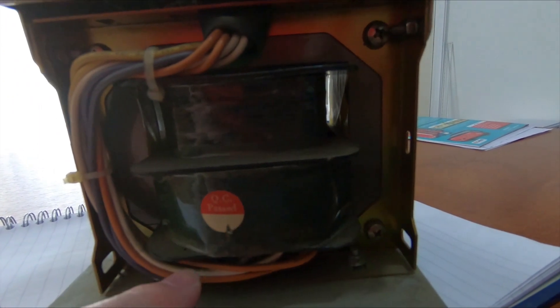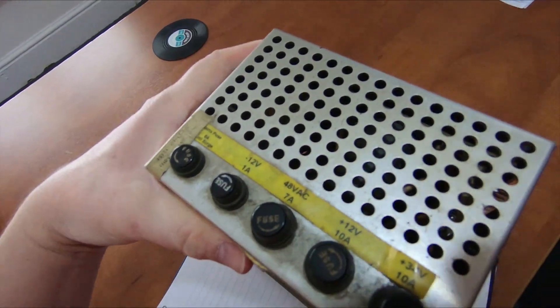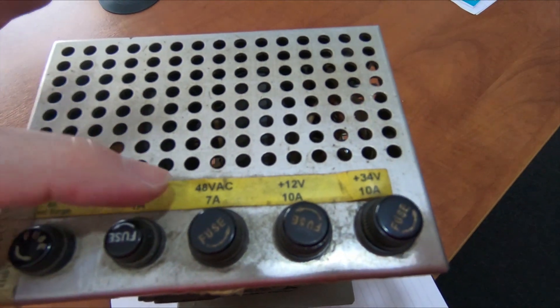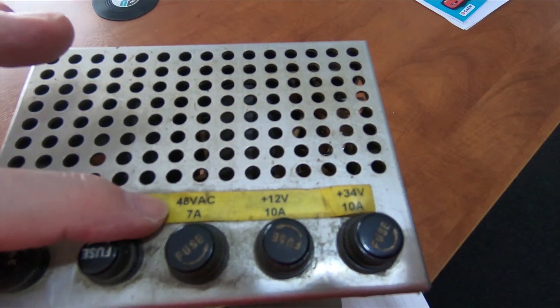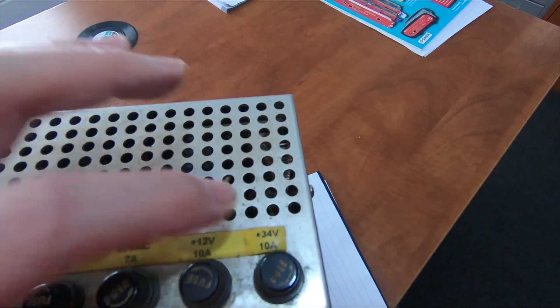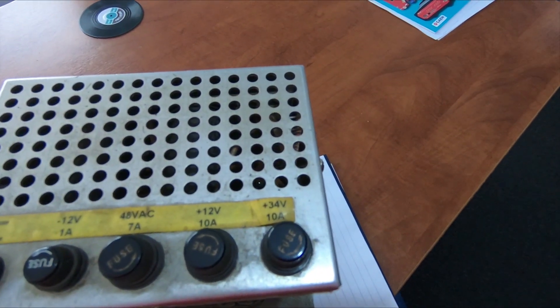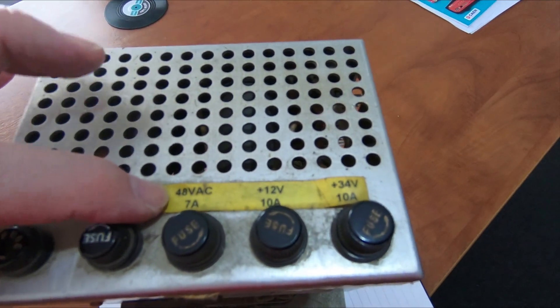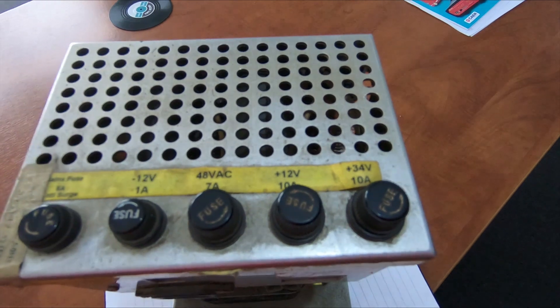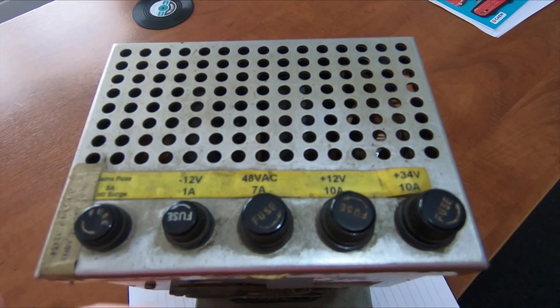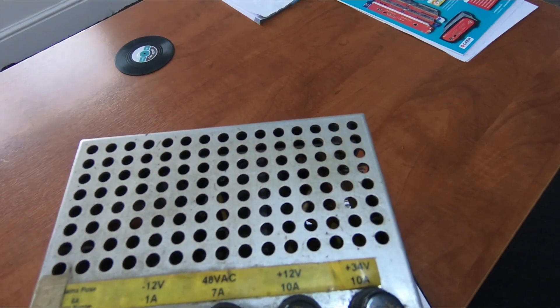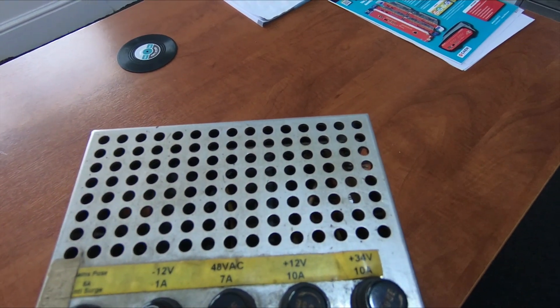There will be multiple voltage taps coming off the transformer winding. On the top of the supply we can see the output voltages: minus 12, plus 48 volts AC, plus 12, and plus 34 volts. The 48 volts AC will come straight off the windings.